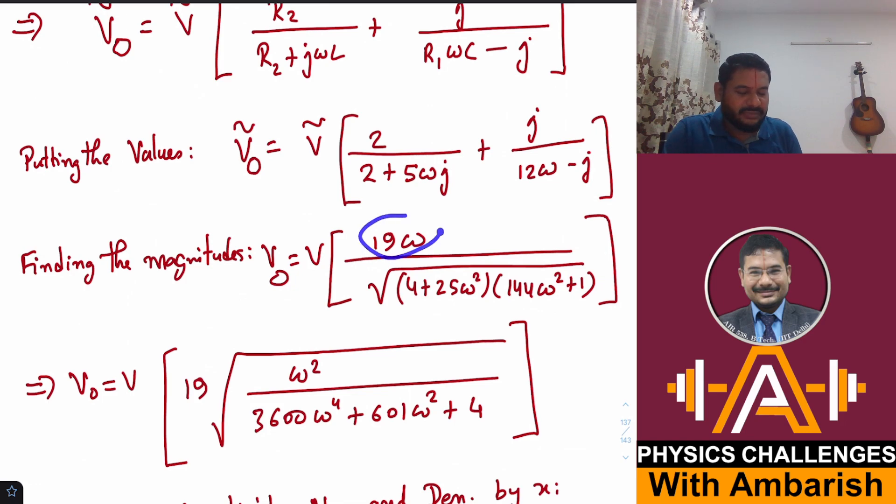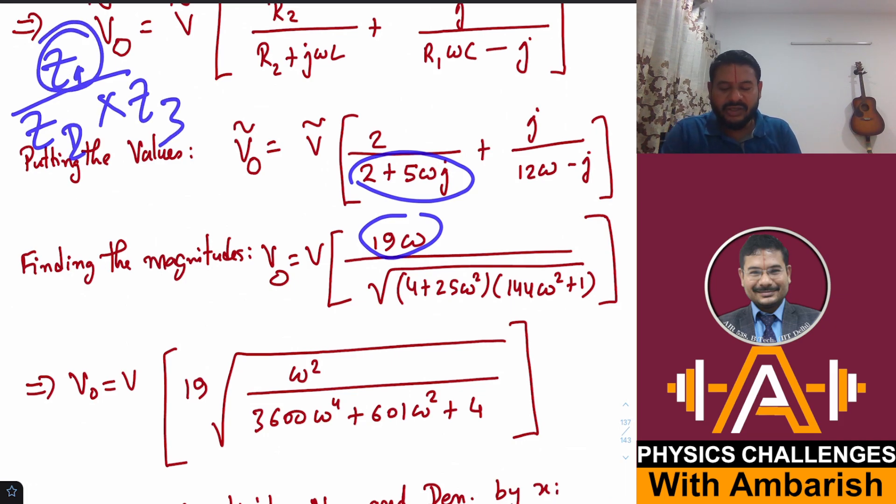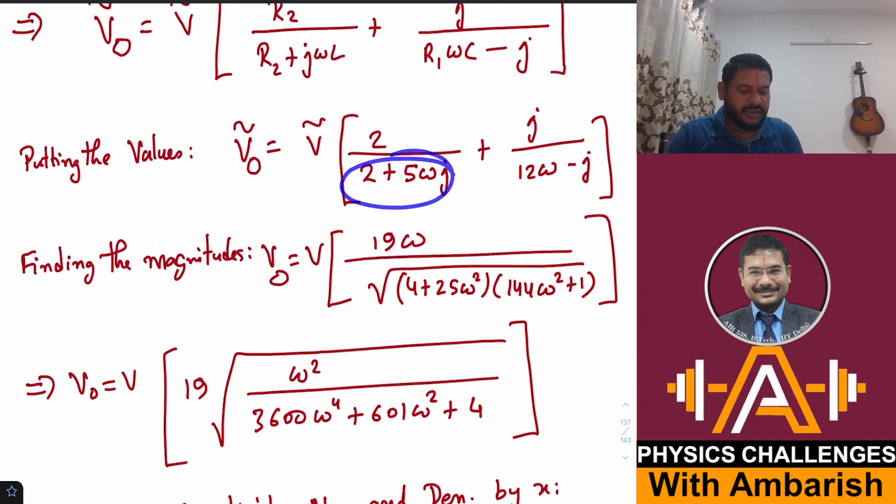The numerator is 19ω. For the denominator, you know that |Z1/(Z2 × Z3)| is |Z1|/(|Z2| × |Z3|). This magnitude is 4 + 25ω² and this magnitude is 144ω² + 1. So this is your amplitude of the output voltage.